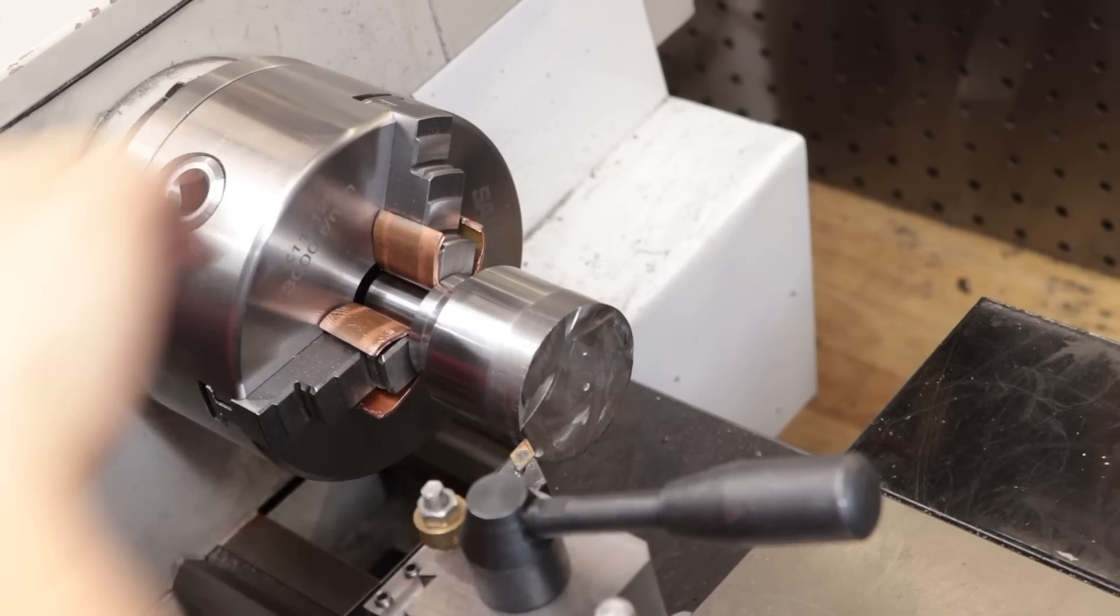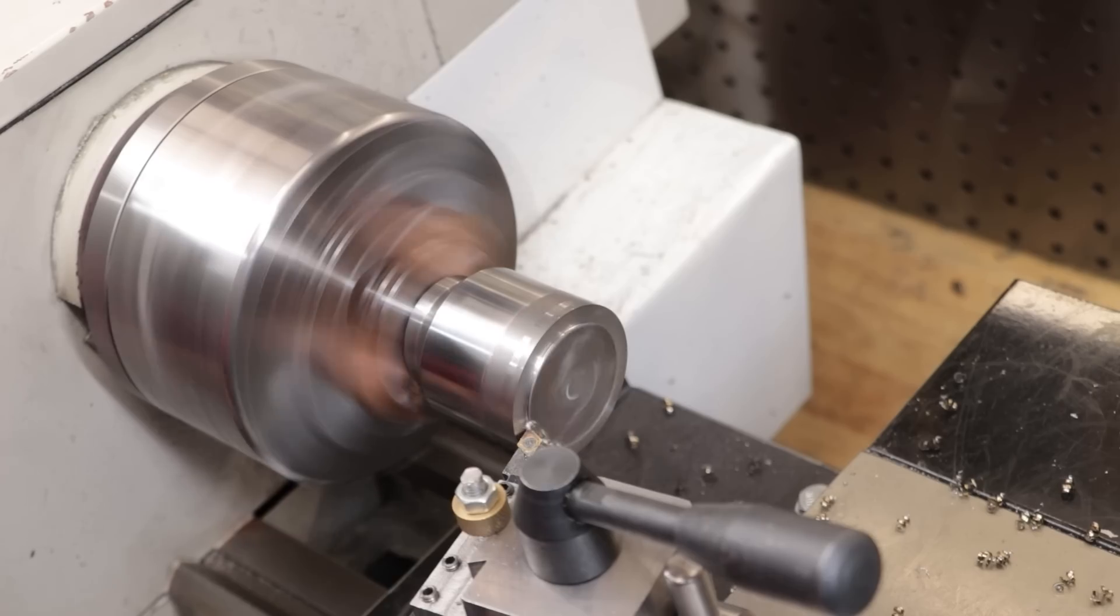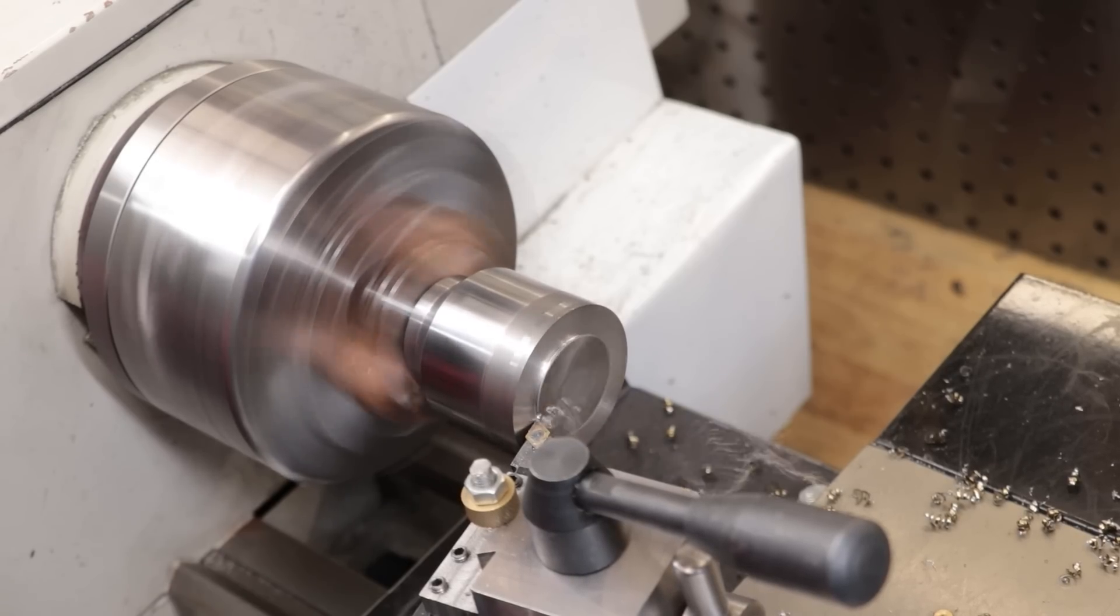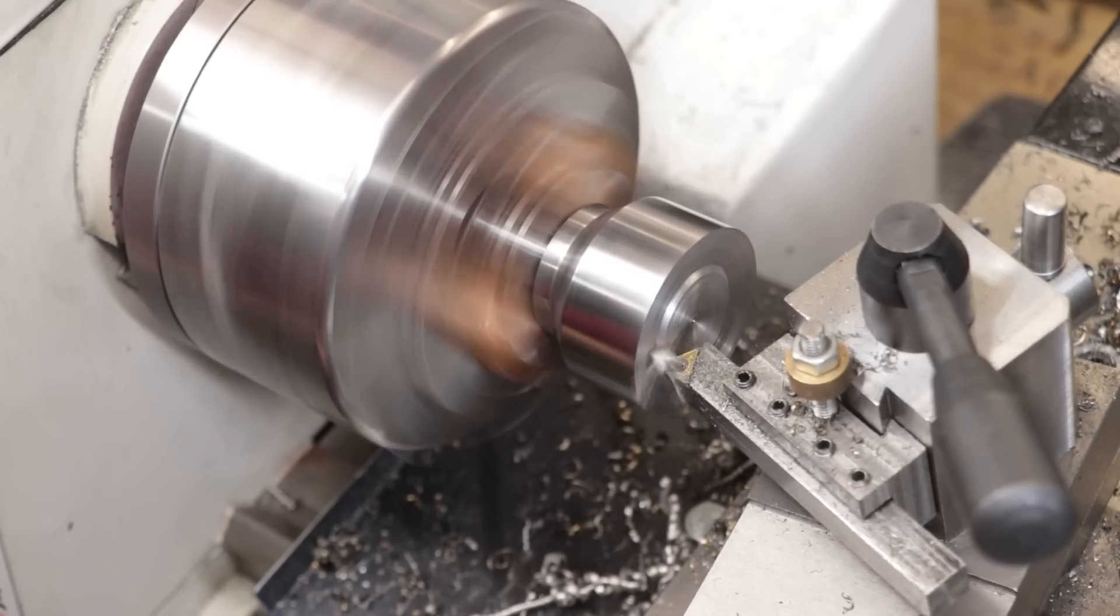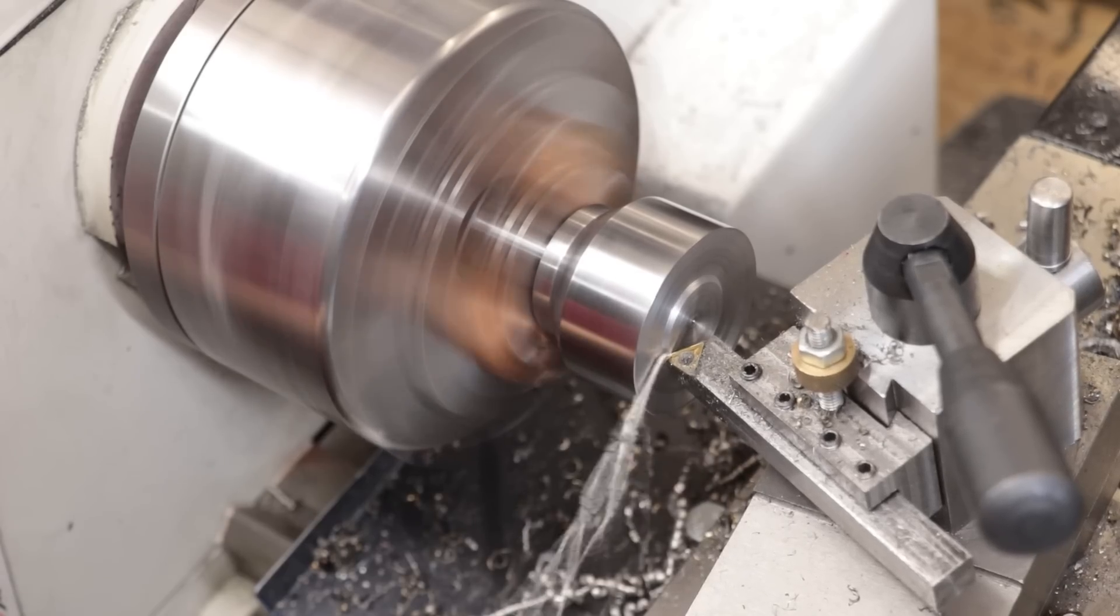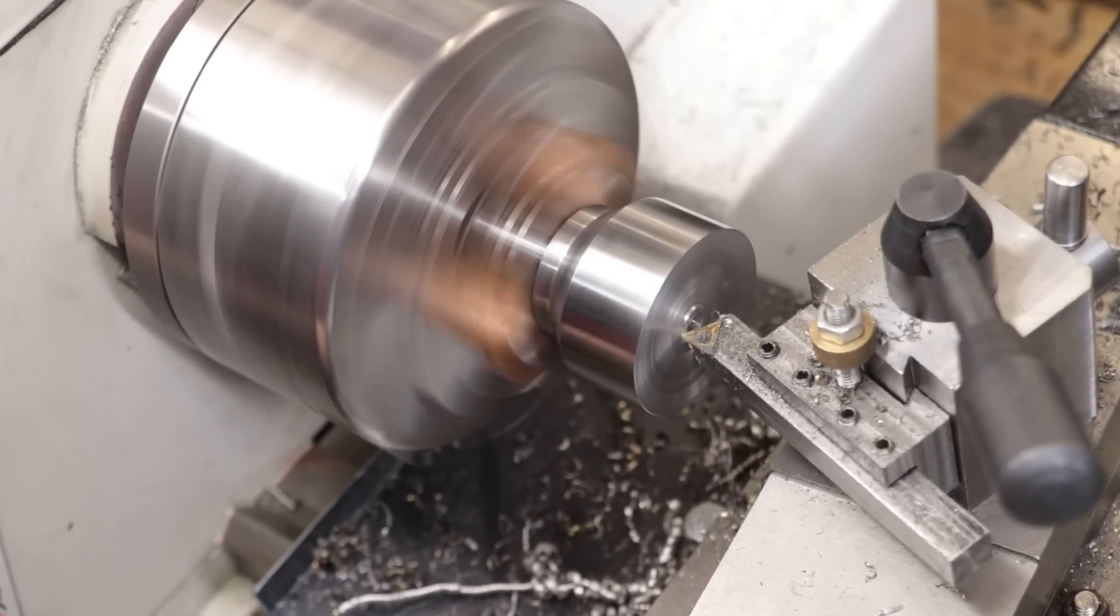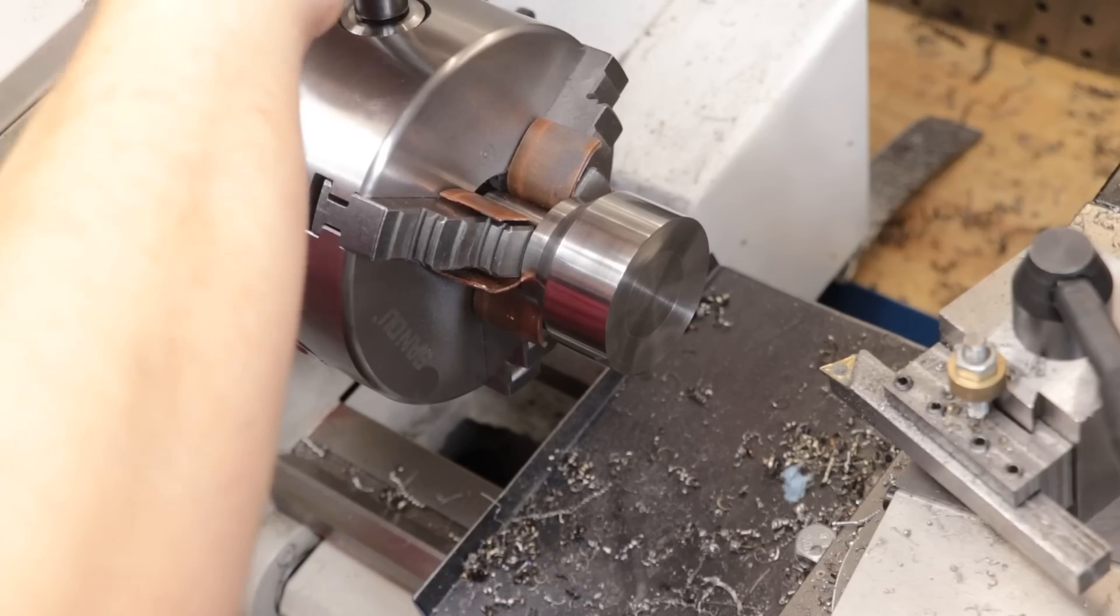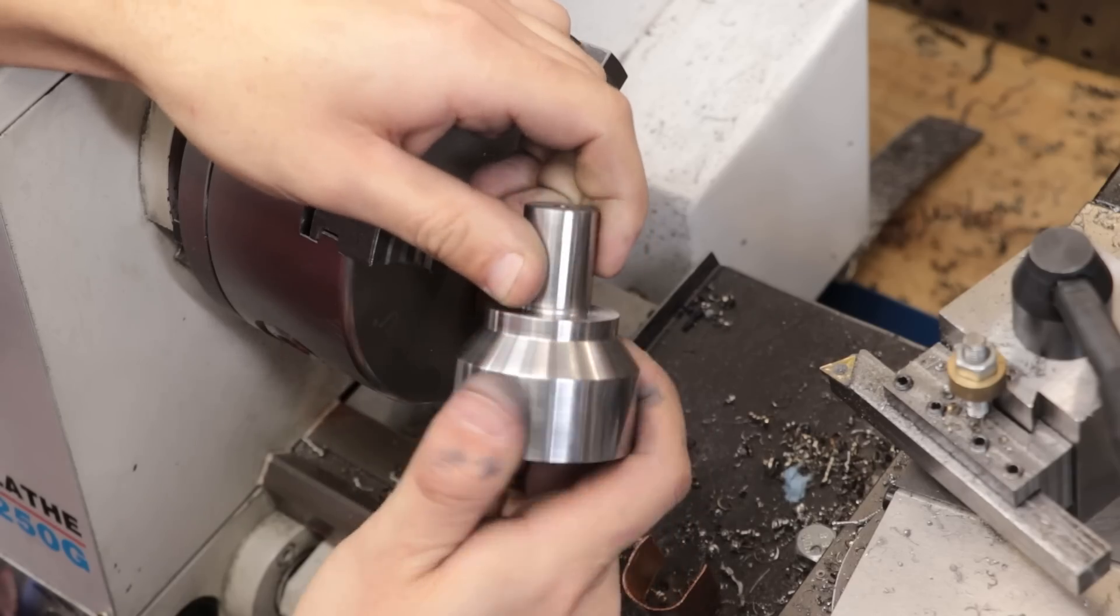The final thing left to do is flip the part in the jaws and make sure to use some copper soft jaws to protect the shank. I'll then clean up the front and then give the bottom some relief. And that is the lathe work done.